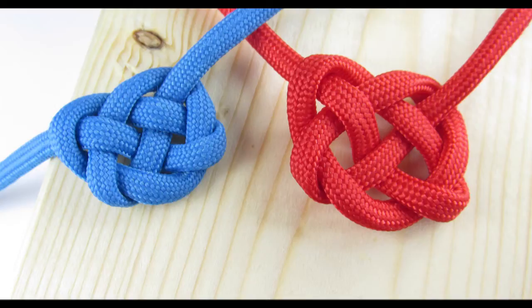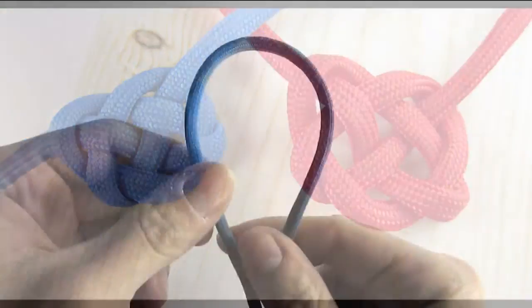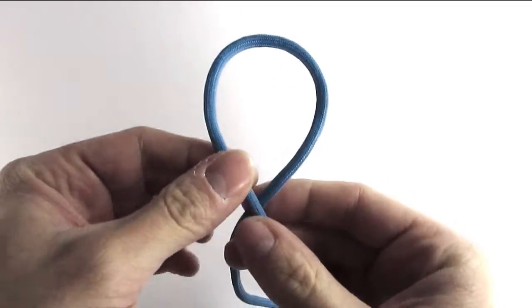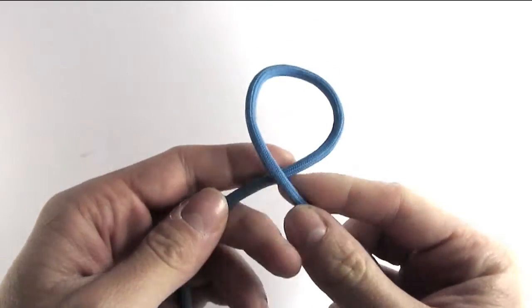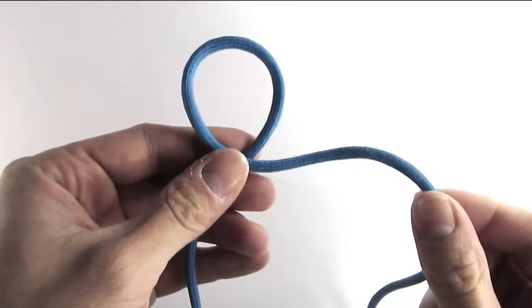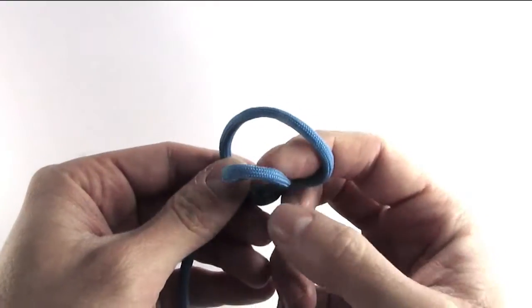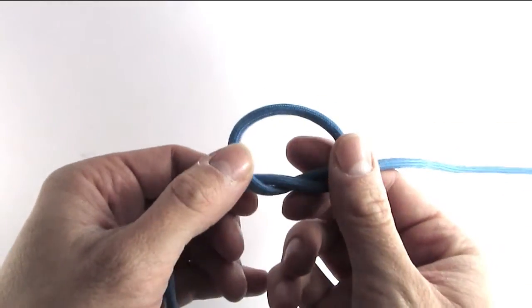The first thing we're going to do is take a cord, fold it in half, then place our left cord over our right, then take the left cord again and place it through the bottom of the loop.